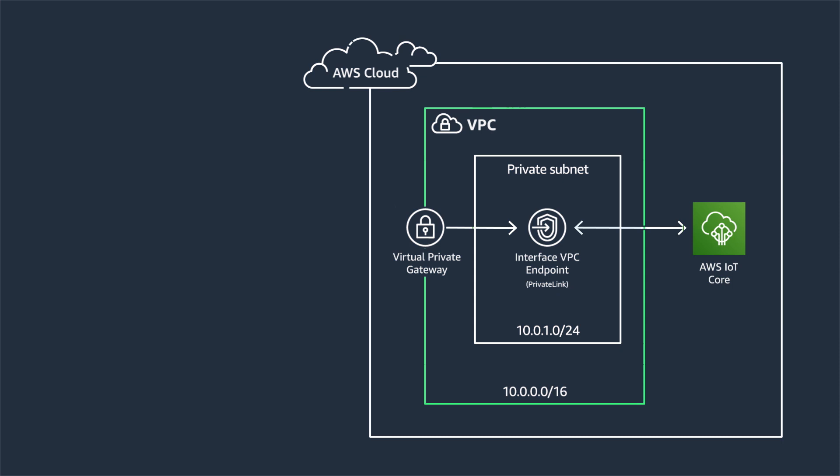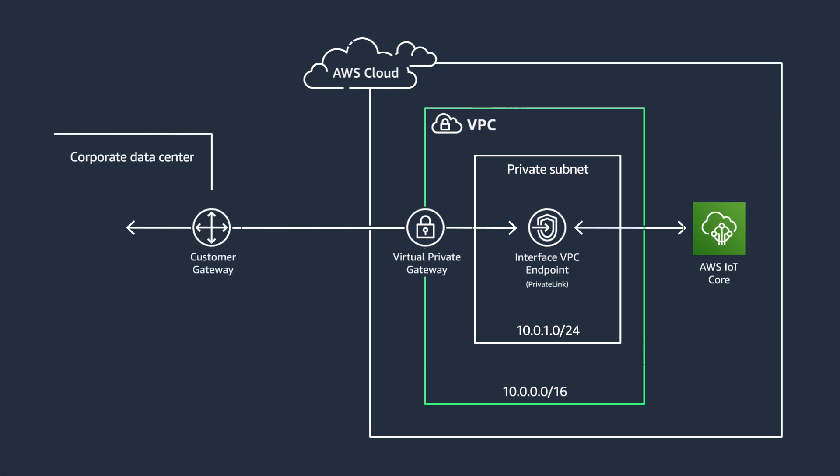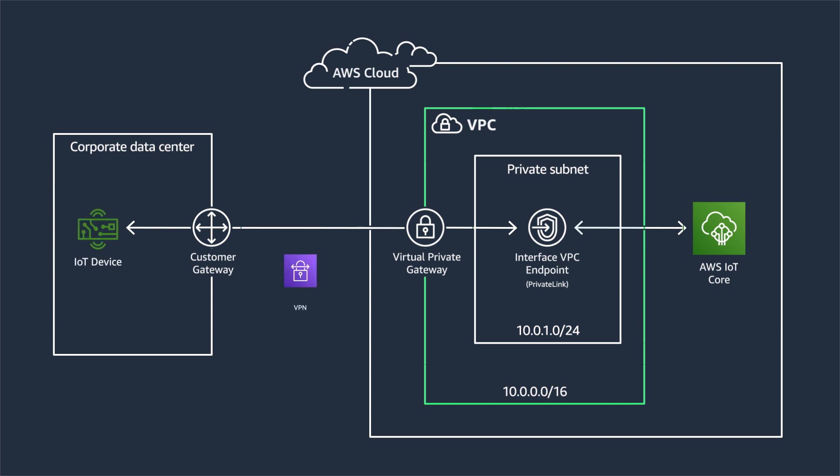For each subnet that you specify from your VPC, it creates an endpoint network interface or ENI in the subnet and assigns it a private IP address from the subnet address range. Then, you will extend the private connectivity all the way to your on-premises network using VPN or Direct Connect Private VIF.